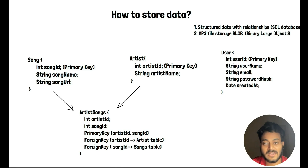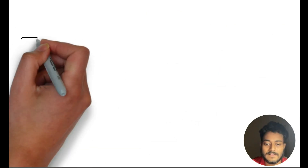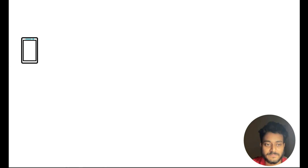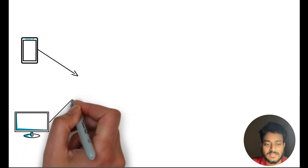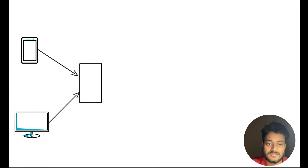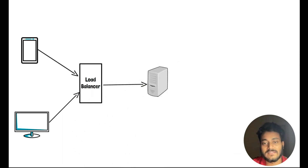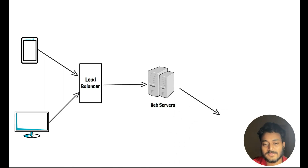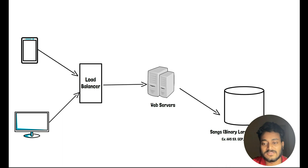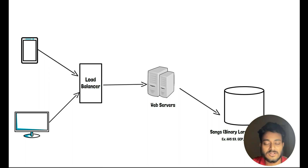For the MP3 files that originally contain the songs, we can have a blob kind of storage. So we can have two DBs to store this information. Clients access our application through a load balancer, and through the load balancer they will be able to access the web servers. From the web servers, we can store data in a blob kind of storage — we can use S3, Azure, or GCP to store the songs.